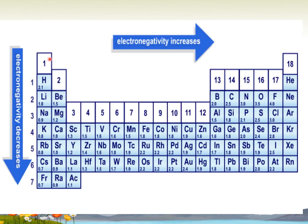These are the trends of electronegativity in the periodic table. Across the period, from left to right, electronegativity increases. Going down the group, electronegativity decreases. Thank you very much.